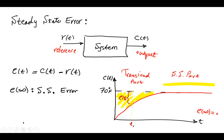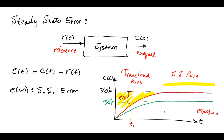But that was an example scenario. Something else can happen too. For example, we may settle down at a different temperature. The room temperature, instead of raising to 70 degrees Fahrenheit, may settle down at, for example, 50 degrees. Then we say the steady state error is minus 20. So it's not zero — steady state error is not zero in this case.